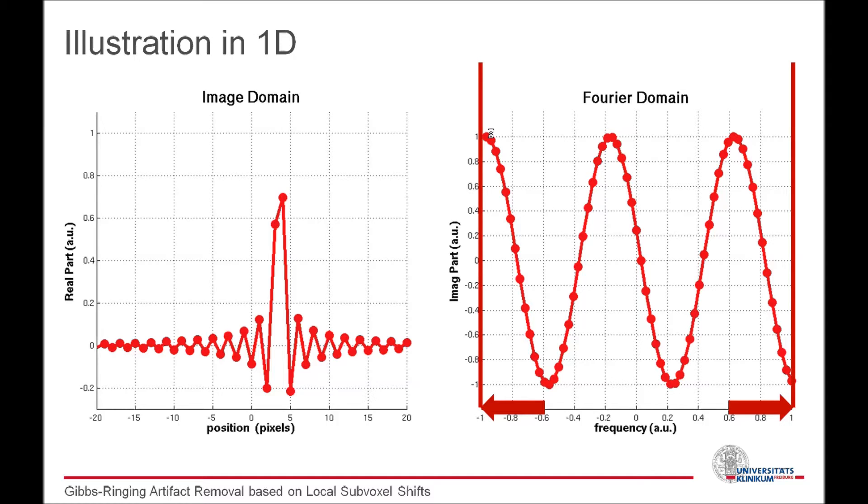What you often hear is that the oscillation occurs because in order to reconstruct sharp edges and objects, we need to have all the high frequencies which are missing in this case. However, this is not the full story. The ringing will always be there, even if we increase the box size. It will always have the periodicity of one voxel.